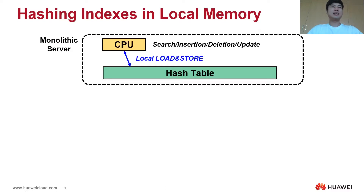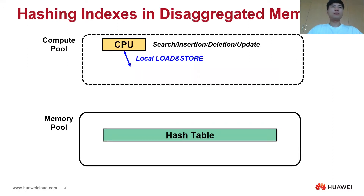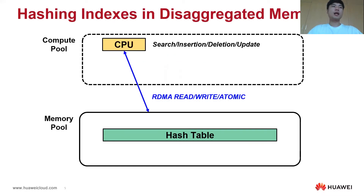Before analyzing hash index in disaggregated memory, we first show how a hash index works in a monolithic server. As shown in this figure, the hash table is stored in local memory, and the CPU relatively operates the local hash table using load and store instructions. In contrast, in the disaggregated memory architecture, compute and memory resources are decoupled, and thus the hash table is stored in the remote memory pool. The CPU in the compute pool uses one-sided RDMA verbs to operate the remote hash table.